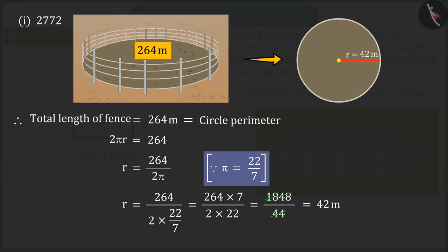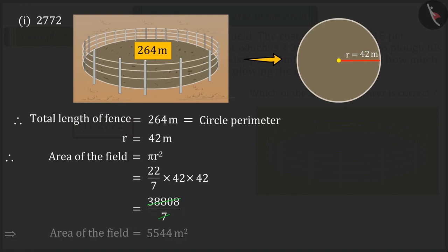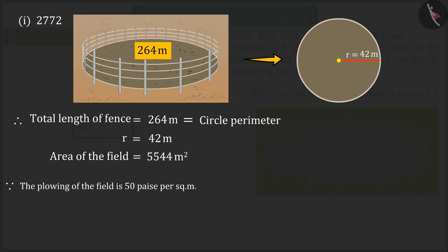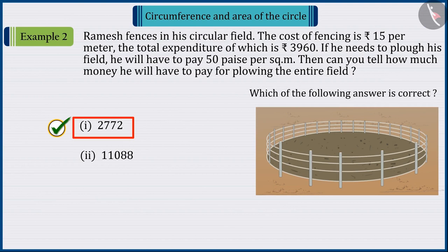Which, when solved, gives the value of radius that is 42 meters. Since we have to find the total expenditure in ploughing the field, for which we will need the area of the field. Solving the value of r in the formula for the area of the circle, the area of the circle, that is, the area of the field is 5544 square meters. Because we know that the ploughing of the field is 50 rupees per square meter. So, to plough the field, Ramesh will have to pay 2,772 rupees. Hence, option 1 is the correct answer.